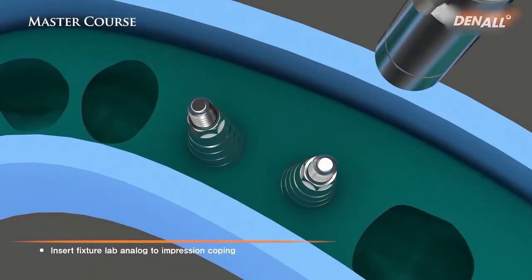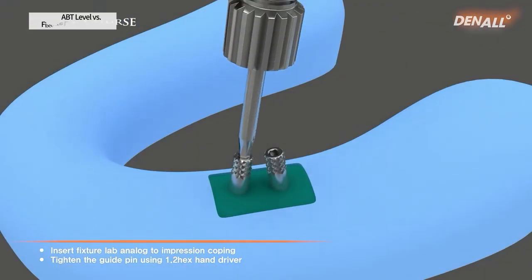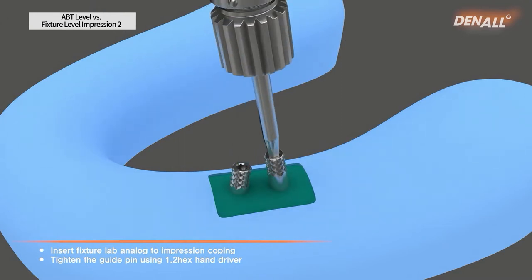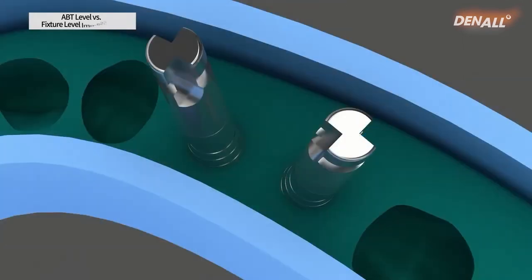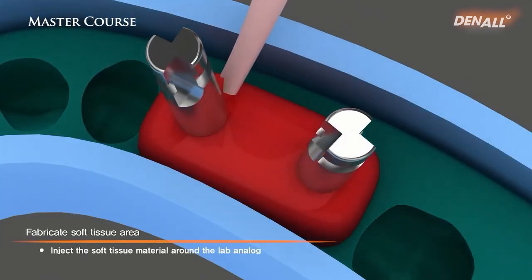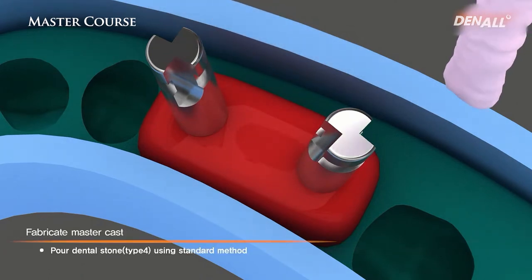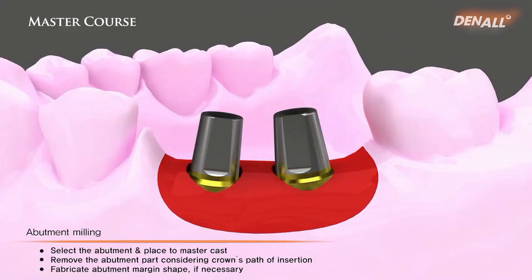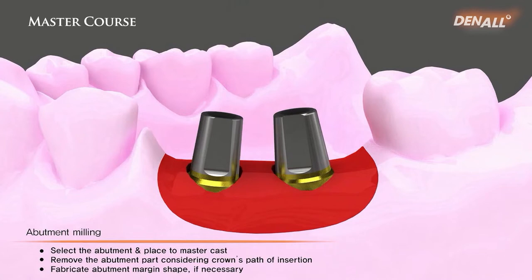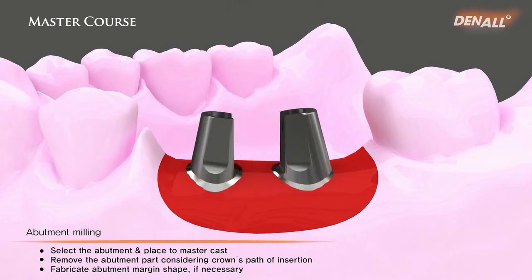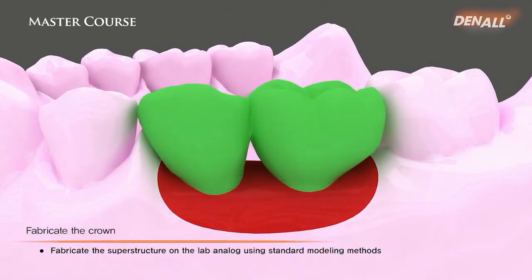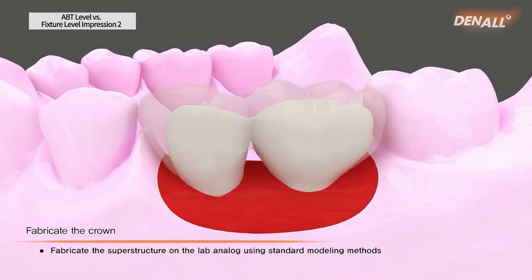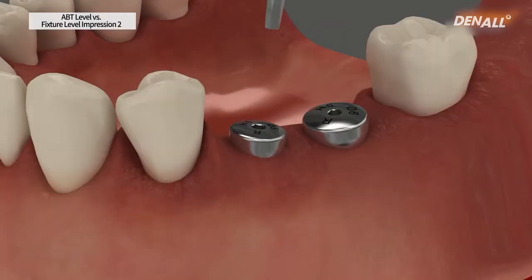From the next step, please use carefully: the lab analog recreates the fixture form. That lab analog is linked again to the pick-up impression coping and screwed again, then 3D positioning will be recreated. This is for creating the soft tissue, creating gummy tissue, and then you pour the cast. That means 3D positioning in the mouth is relocated to the cast model, and the abutment is selected, customized, and then modified. In the case of a custom abutment, of course, you don't need the modification step. And then you fabricate the crown, and once the crown is fabricated in the lab, it comes to the clinic.